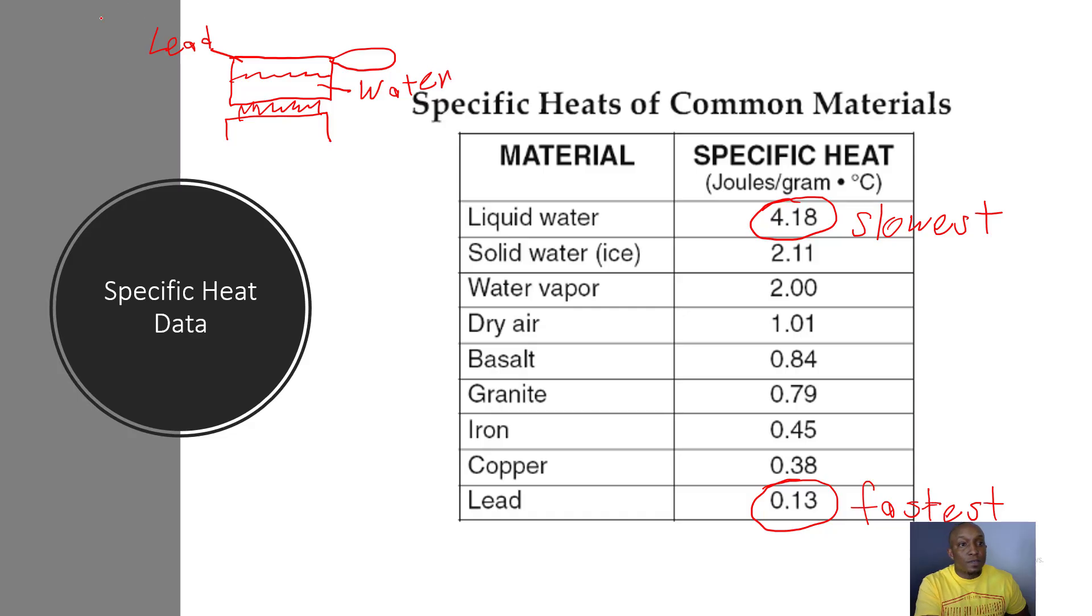If you notice, lead has a specific heat of 0.13 while water has a specific heat of 4.18. Now, while we heat this pot up with this water on top of the stove, which one is going to heat up faster? The pot that's made out of lead or the water? Notice that the pot is actually going to heat up faster because it has a lower specific heat. The water is going to take much longer to heat up, so the pot is going to heat up faster while the water is going to heat up slower.